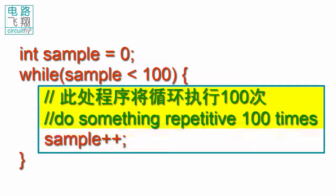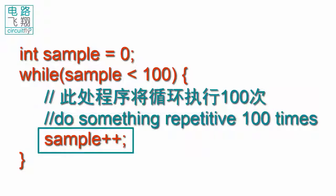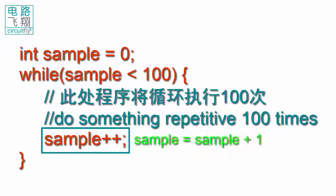则大括号里的程序将被循环执行。而这部分程序每执行一次,sample都会自增1。两个加号是自增操作,相当于sample等于sample加1。